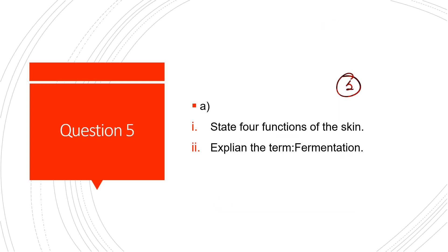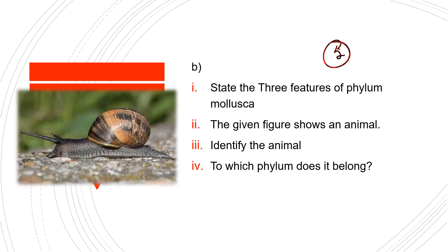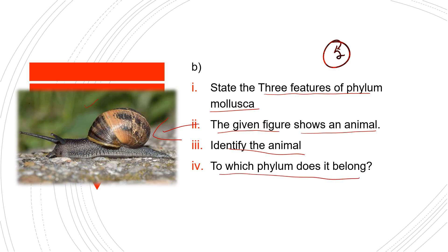Question 5: State four functions of the skin and explain the term fermentation. Looking at the diagram shown, state three features of phylum Mollusca. Identify the animal shown in the figure and state to which phylum it belongs.